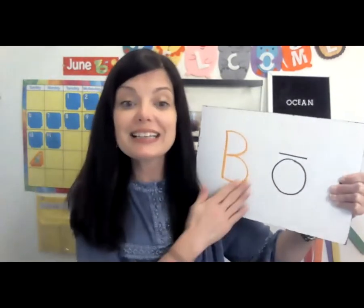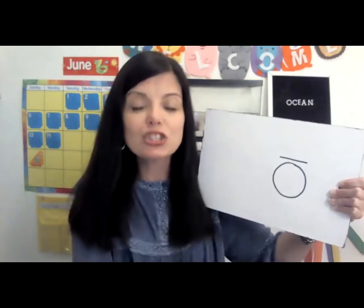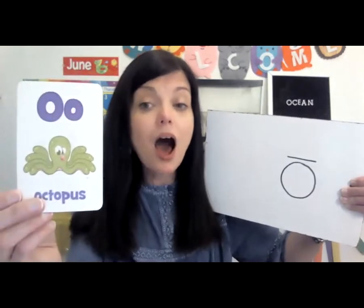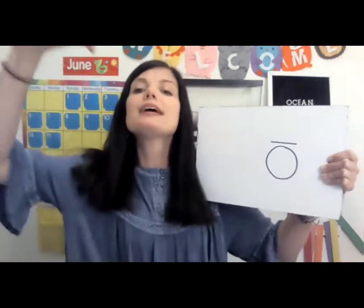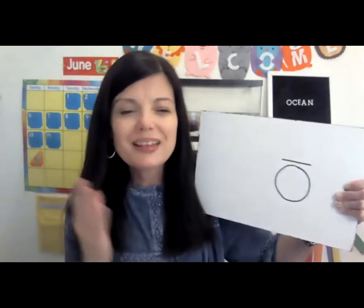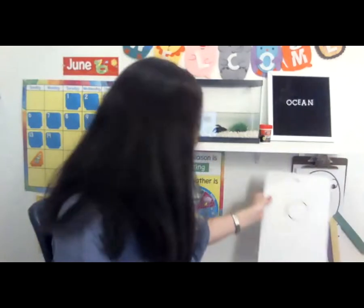You did a great job! We learned that O has two sounds. O can say 'oh' as in octopus, and O can say 'O' as in ocean. And that's what we're talking about today and all week — the ocean. One of the creatures that lives in the ocean is a dolphin, so today for math we're going to be doing a dolphin number line.